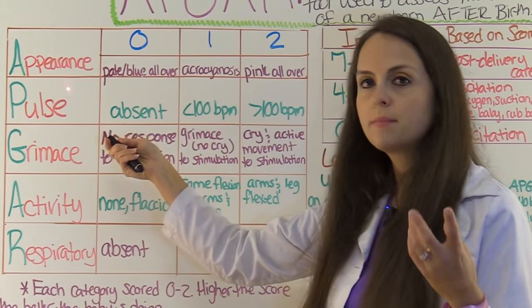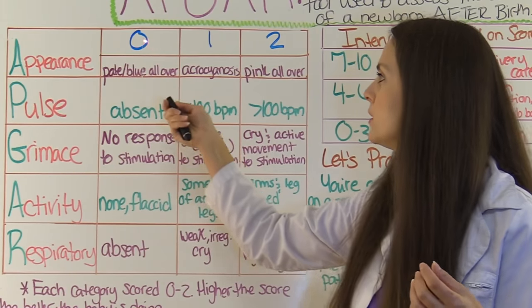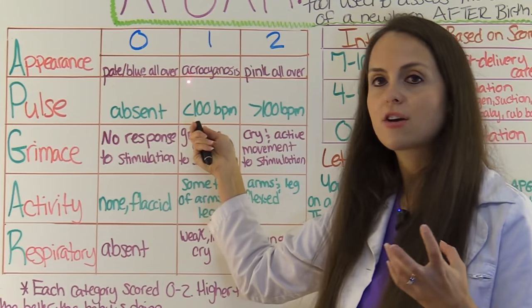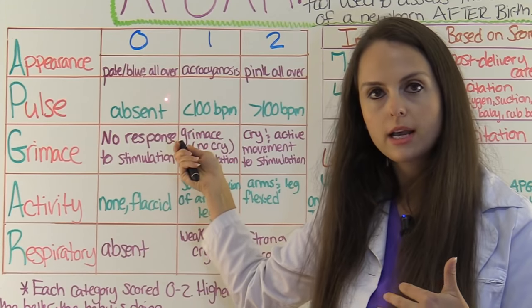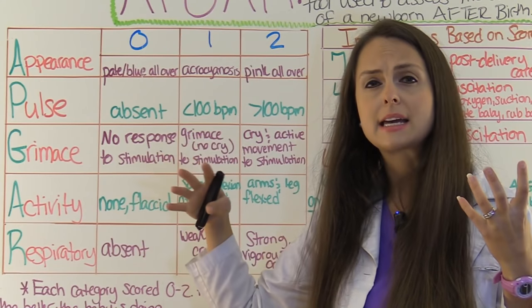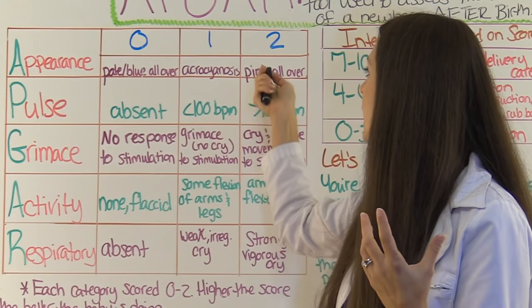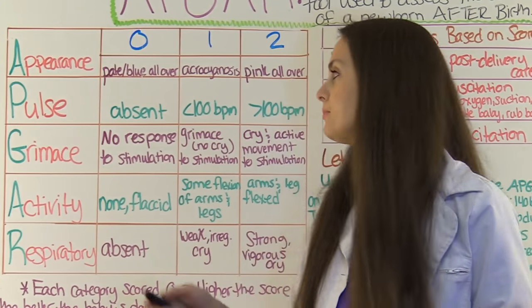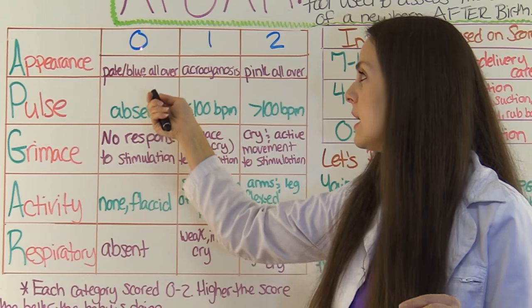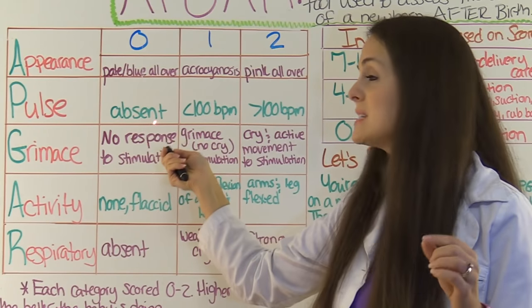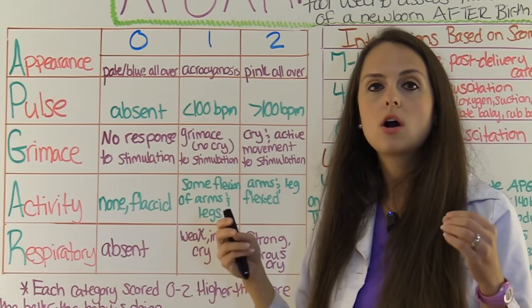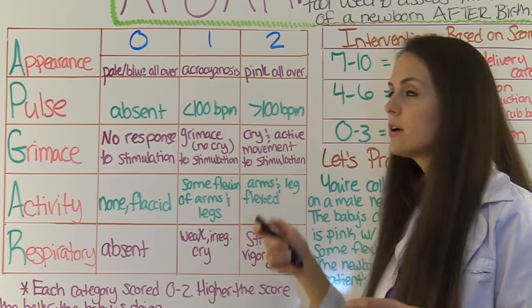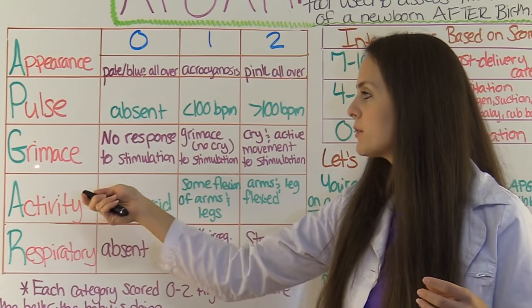For appearance, you would give a zero if the baby was pale all over or blue all over, a one if there was acrocyanosis — pink body but blue in the extremities like the hands and feet — and a two if the baby was pink all over from head to toe, extremities included. For pulse, you give a zero if the pulse was absent, a one if the heart rate was less than 100 beats per minute, and a two if it was greater than 100 beats per minute.